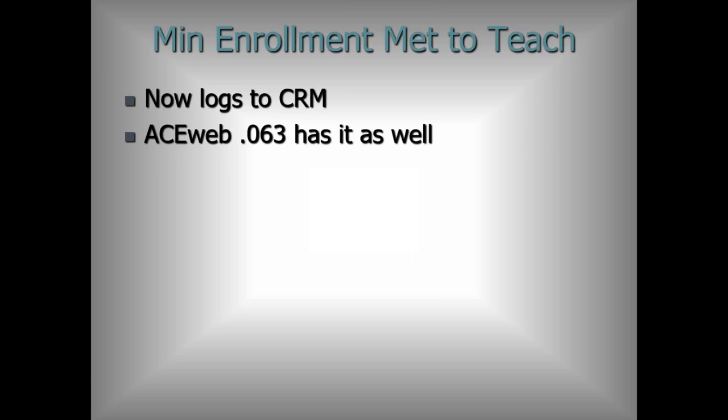Min enrollment met to teach: this is a newer feature that now logs to CRM for those of you who have it. That way you have a log of when that email is generated, so when a teacher says 'I never got an email saying minimum enrollment was met,' you can look and verify yes, you did receive it on such-and-such date. AceWeb 63 is also going to log to CRM as well — it's a kind of tattletale feature that gives you peace of mind the feature worked for that instructor.